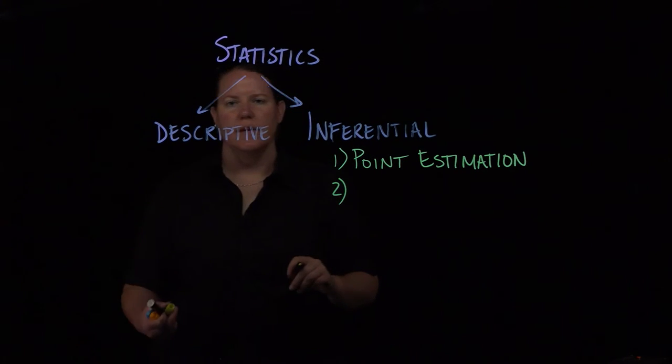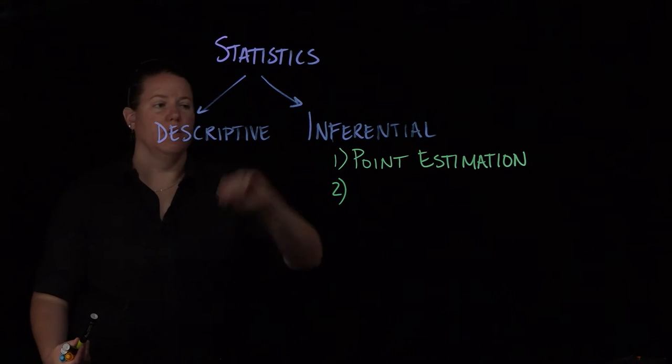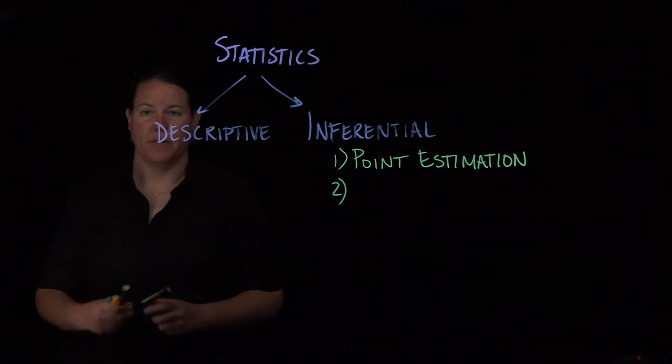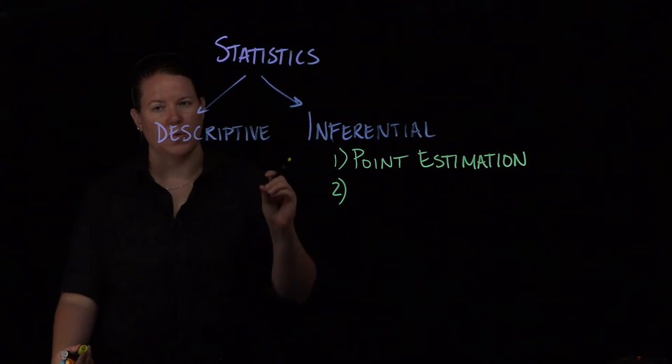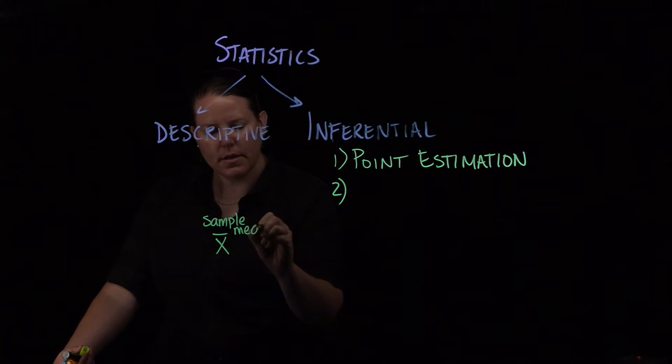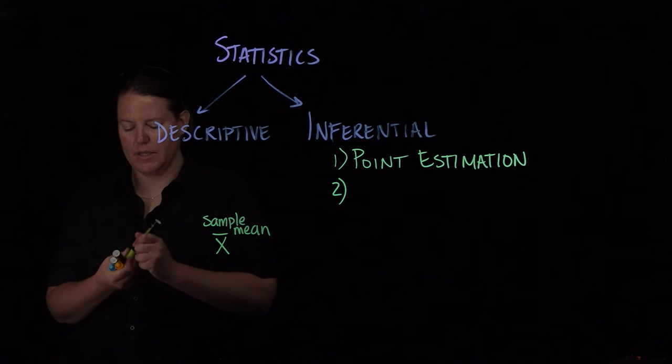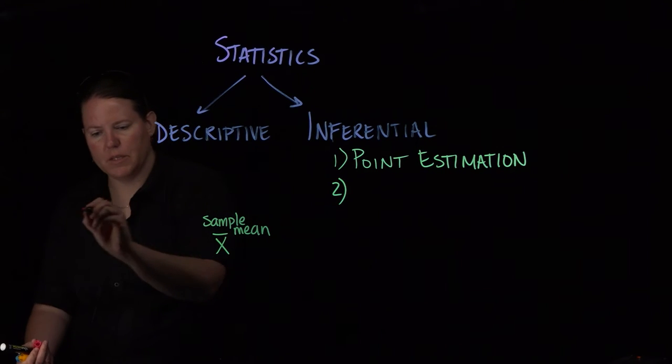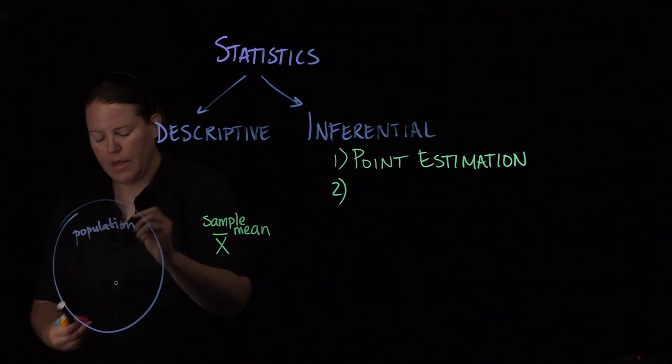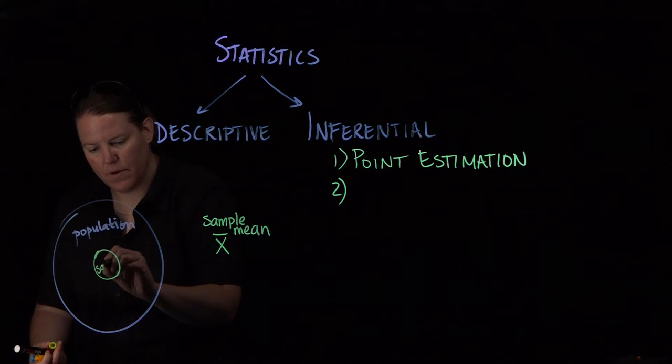Point estimation is where we simply take something that describes the sample and says this also describes the population. So what that means is if we took a mean of the sample, this is the sample mean, and this is some group that is indicative of the population. You're constantly in your head keeping this picture in mind that the population is really big and the sample is taken out of that population. And it's not so big.